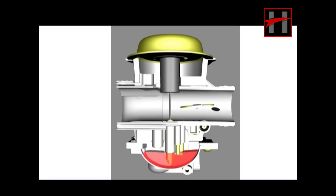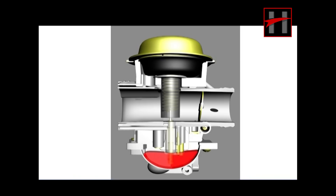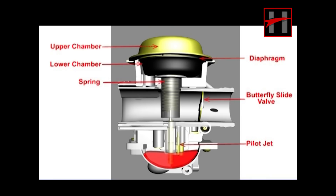It is clear that the lifting of the piston is controlled by the opening of the butterfly slide valve. The BS type carburetor consists of the following parts: diaphragm, lower chamber, upper chamber, spring, butterfly slide valve, pilot jet, main jet, hole in piston, and jet needle.